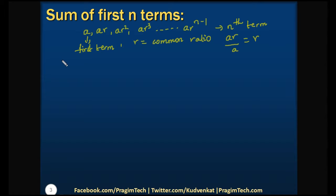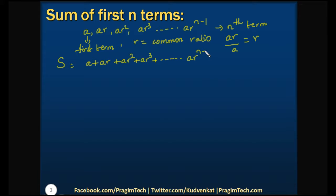Now we want to find the sum of these terms. So the sum, which we will represent with the letter S, equals adding all these terms: A plus AR plus AR squared plus AR cubed and so on up to the nth term, AR to the power of n minus 1. Let us name this as Equation 1. As we are considering n terms, let us name it as Sn.